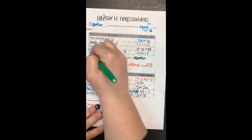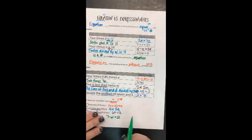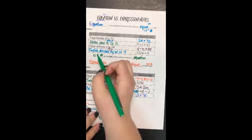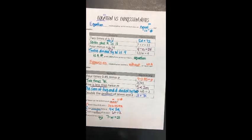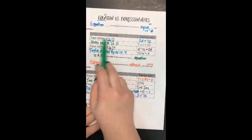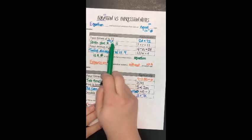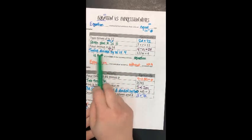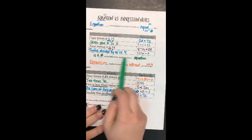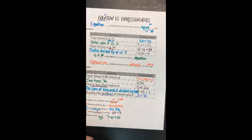Equals, when it says is a number, right, is and then a number at the end of a sentence means it's an equation. So that's a good trick if you look at the end and it says is 72, is 11, is 24, is 4. So anytime you see the word is followed by a number at the end of a sentence, it means it's an equation. And that's equations versus expressions.